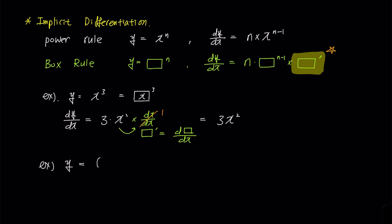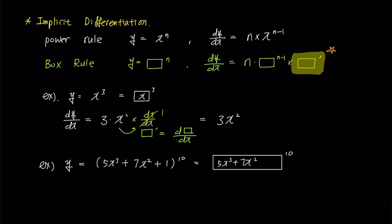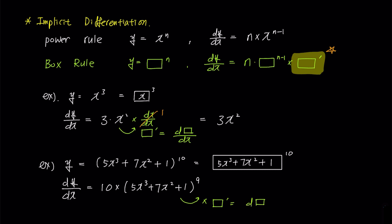Let's take a look at the second example. The box contains more complicated terms: 5x cubed plus 7x squared plus 1, all raised to the power of 10. Using the box rule and differentiating with respect to x, we get 10 multiplied by 5x cubed plus 7x squared plus 1 to the power of 9. Then we must multiply by box prime. Since we are differentiating with respect to x, box prime is d(box) over dx, which evaluates to 15x squared plus 14x.